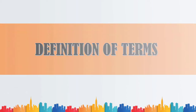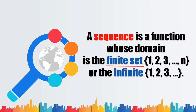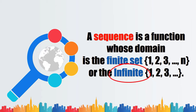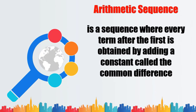Number one: a sequence is a function whose domain is a finite or infinite set. When we say finite set, it is a set with an exact number of elements, while an infinite set contains an unlimited number of elements.